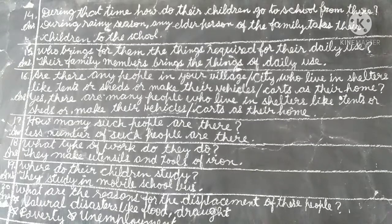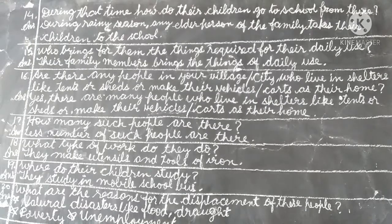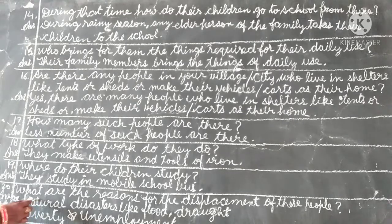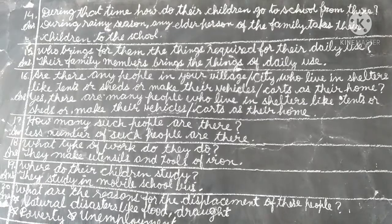Question 20: what are the reasons for the displacement of these people? Answer: natural disasters like flood and drought, poverty, and unemployment (behrozgaari). So children, these are your question answers of chapter 2 that you can learn and write in your notebook.